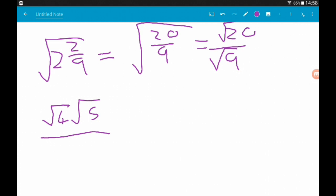On the bottom, root 9 is 3. So, up on top, the square root of 4 is 2. So, we got 2 root 5 over 3.